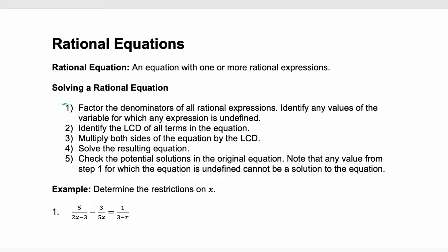We have five steps to solving rational equations. The first step is probably one of the most important. You need to factor the denominators of every single rational expression and then identify any values for the variable that make that expression undefined. Undefined is when your denominator would be equal to zero. You can't divide by zero, so if you end up with a solution that would make that denominator zero, it's not a true solution and we need to throw it out.